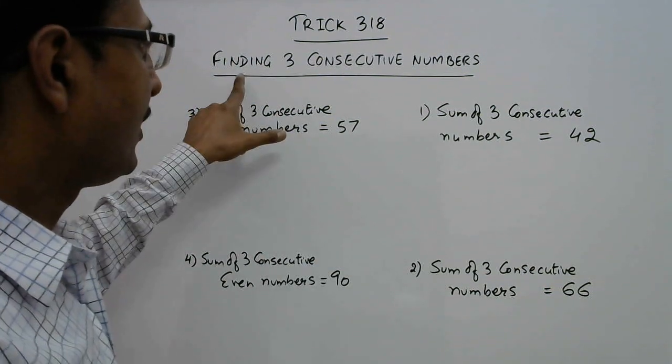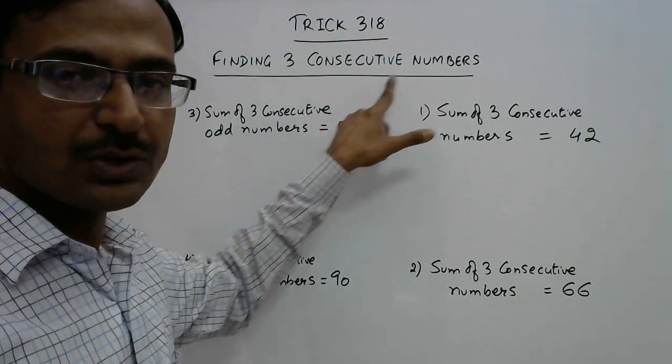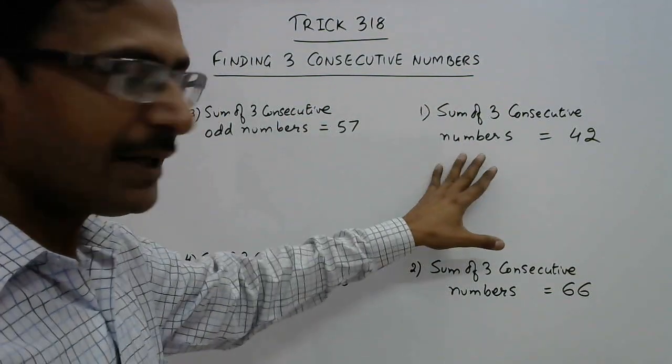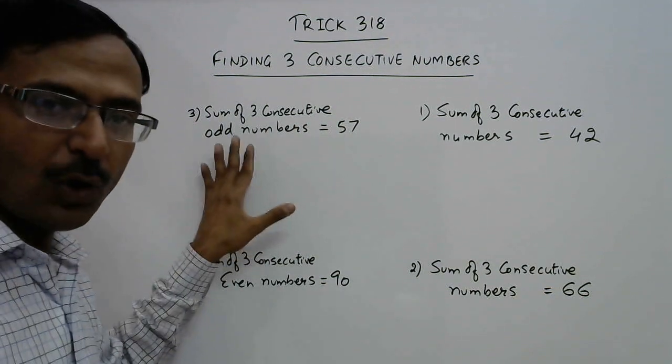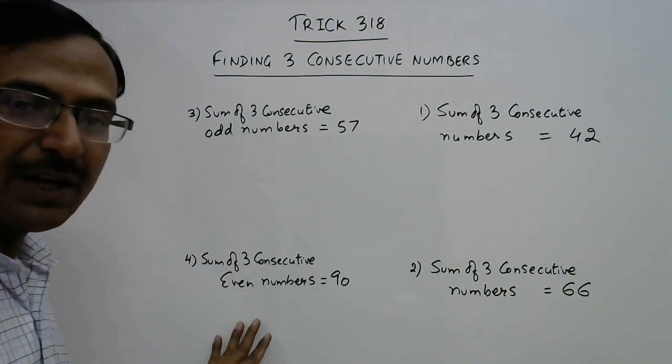This is a question in which we have to find three consecutive numbers. They can be either three consecutive numbers, three consecutive odd numbers, or three consecutive even numbers.